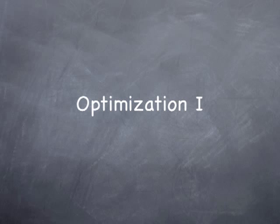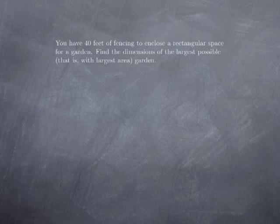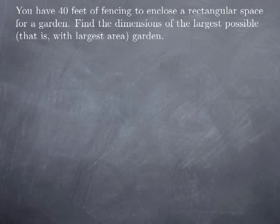As with related rates problems, these are most of the time word problems. And so one of the steps will be to extract the information out of the text and reformulate it in mathematical terms so that we can handle it. So let's start with a very simple example: you have 40 feet of fencing and you want to enclose with it a rectangular space for a garden.